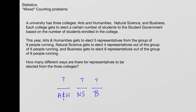In this case, it's not a situation where we just have five people running from arts and humanities and we simply take those five people. We need to figure out how many possible ways there are to get the groups from arts and humanities, natural science, and business.